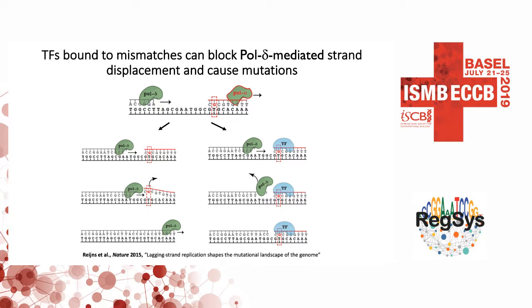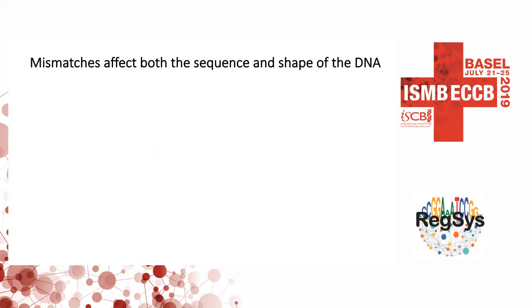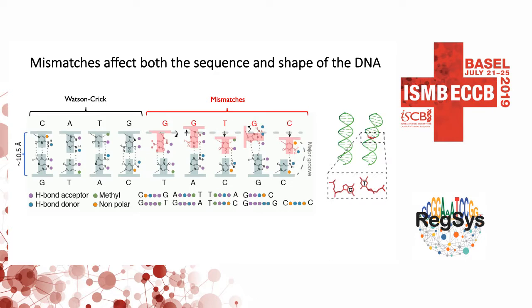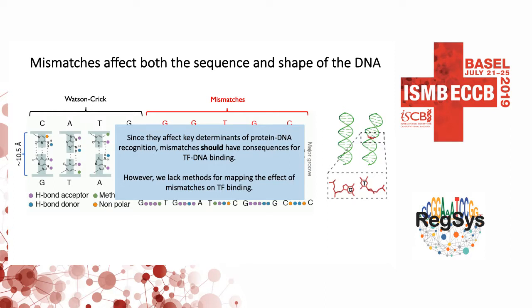The question we wanted to ask is: does this binding occur in the first place? The reason to doubt it is because mismatches affect both the sequence and the shape of the DNA. Looking at Watson-Crick base pairs versus mismatched sequences, just changing the base does change the nature of the functional groups available, which are typically what the transcription factor interacts with. More importantly, you also change the shape locally — in some cases bringing the diameter of the DNA closer or creating local kinks. Since both sequence and shape are key determinants of protein-DNA binding, we expect mismatches to show a different landscape of binding.